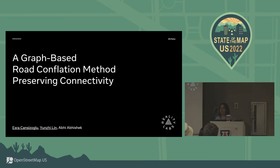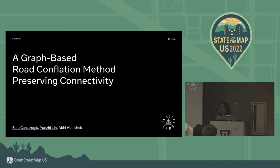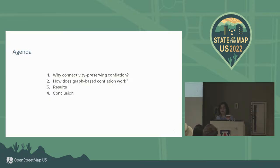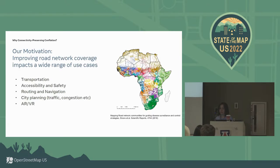Hi everyone. I'm Ezra from Meta. Today we will be talking about how we are improving our road conflation capabilities at Meta, which is at the backbone of most of the things that we are providing, such as Daylight. This presentation talks about our new method which cares about preserving road connectivity. I will be talking about why we care about this problem, how this proposed graph-based method works, followed by results and a conclusion.